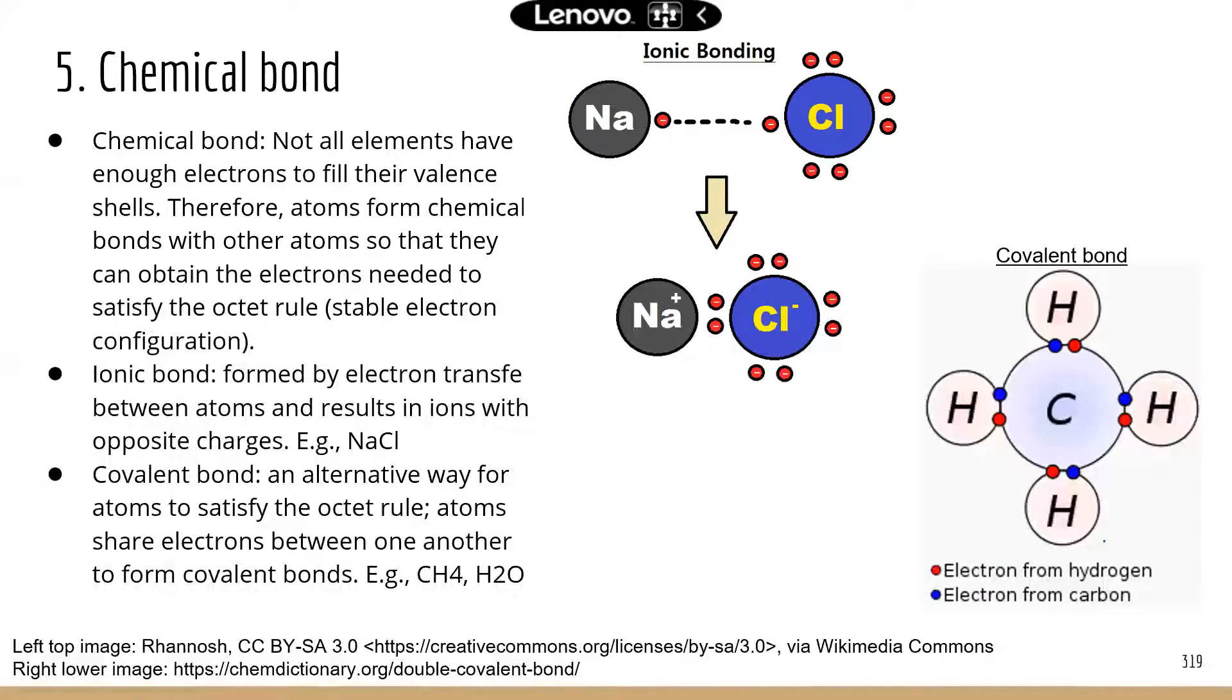What is a chemical bond? The chemical bond is really a kind of interaction with electrons between different atoms. So atoms form chemical bonds with other atoms so they can get to eight electrons in the valence shell, which is a stable electron configuration.